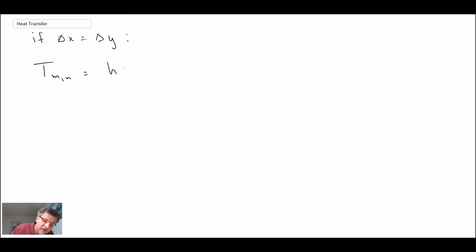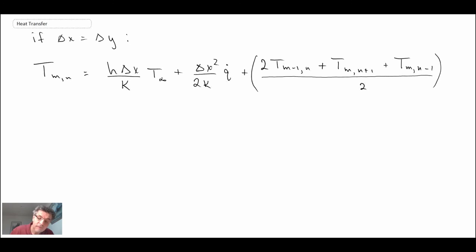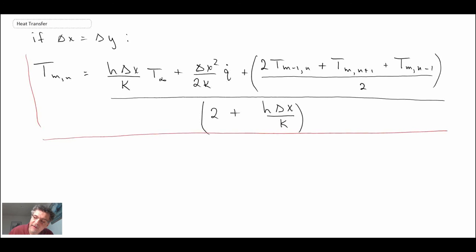So this becomes the equation that enables us to handle the boundary condition where we have convection, convective heat transfer through the surface. And we're doing this in a manner where we can have internal generation. That's why we have the q dot term. But that would then become the equation that you would put in for that boundary within your finite difference formulation for the heat diffusion equation. So that is convection at a boundary.